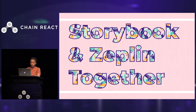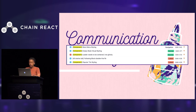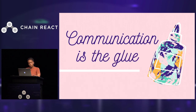So how do we put all this together? The first thing is communication — it's the glue, it's the foundation. We need all teams — design, engineering, QA, and product — to be on the same page when it comes to components, or it will be a hot mess. The product team needs to make tickets in Jira, and the QA team needs to test the components in isolation.